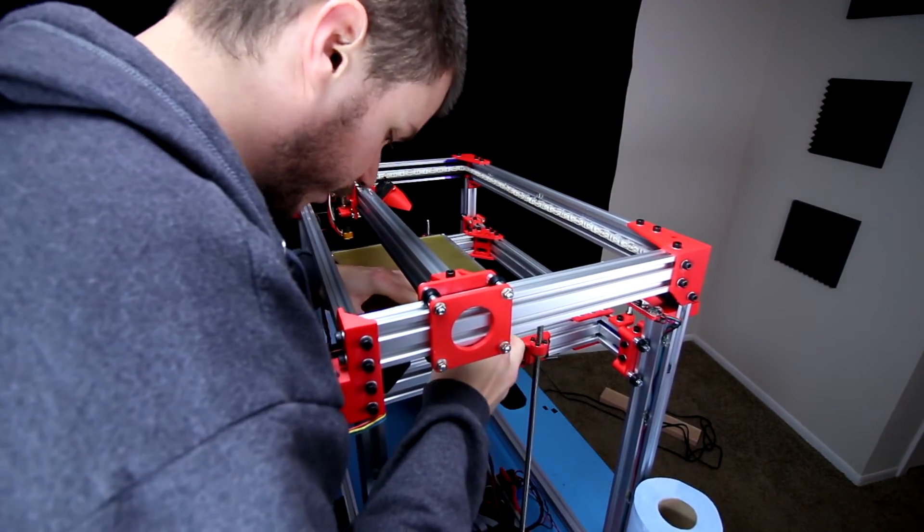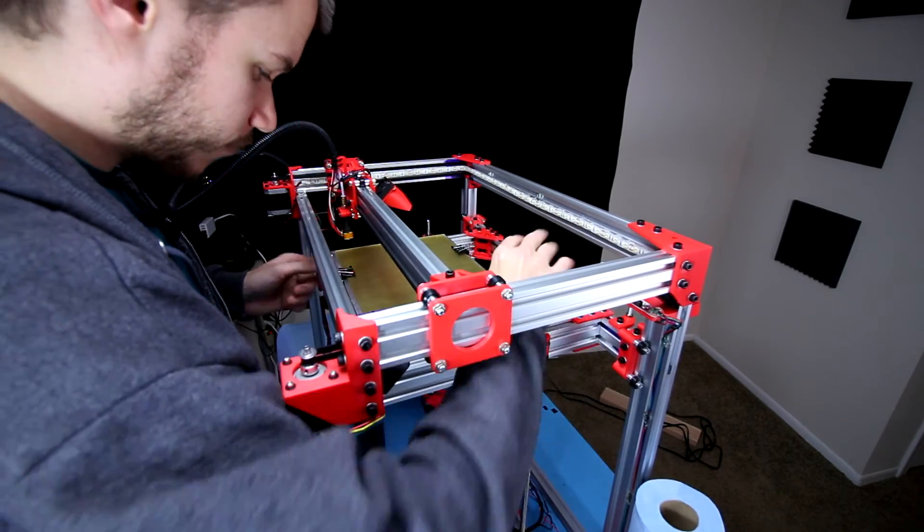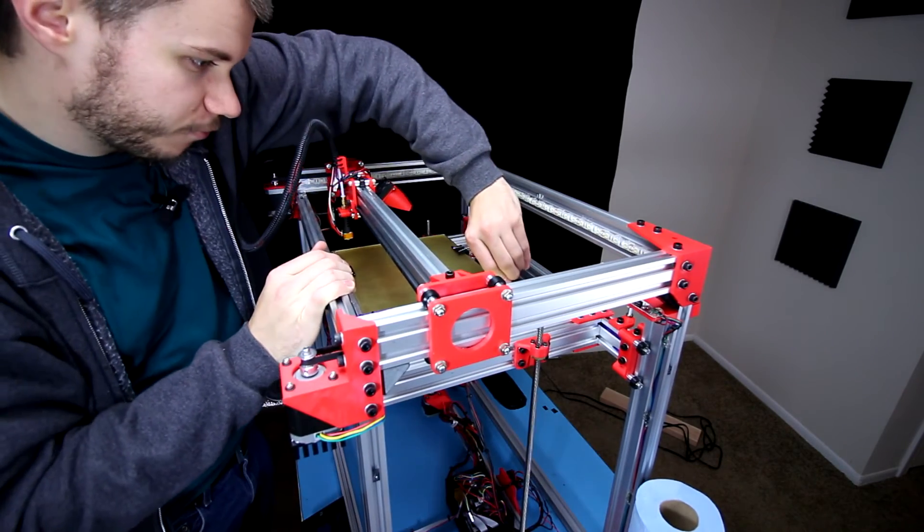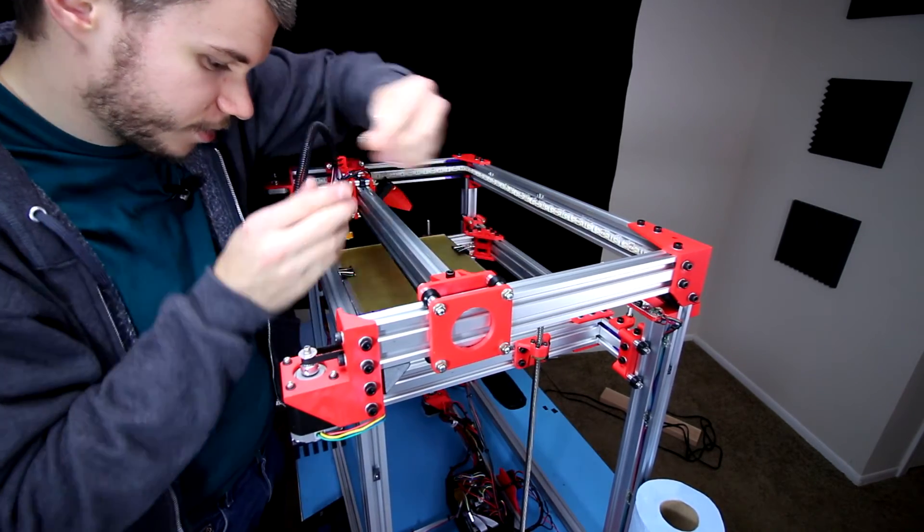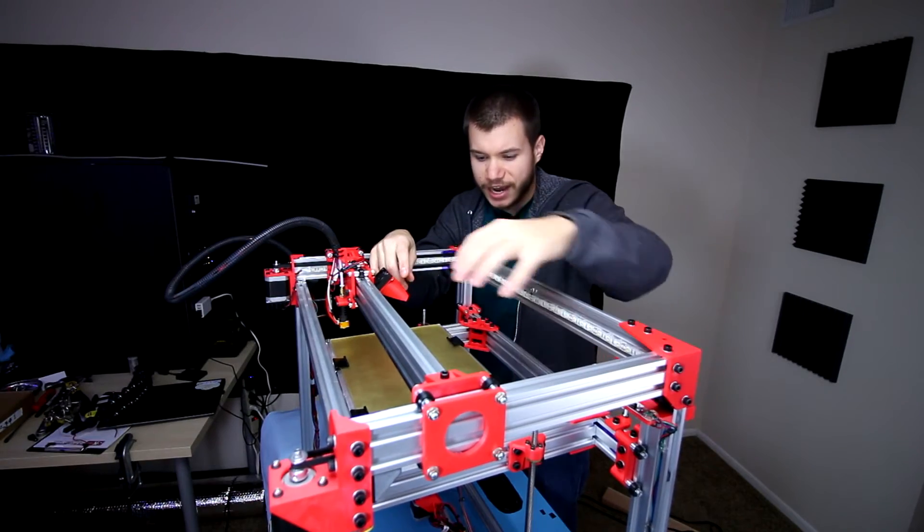What I like to do is use these binder clips. I use at least four to six of them for this particular size of bed. Usually four will be decent for any standard size 3D print bed, just enough to keep everything from sliding. Once I have everything in place I'll go ahead and remove these top posts because they'll get in the way of the print head.